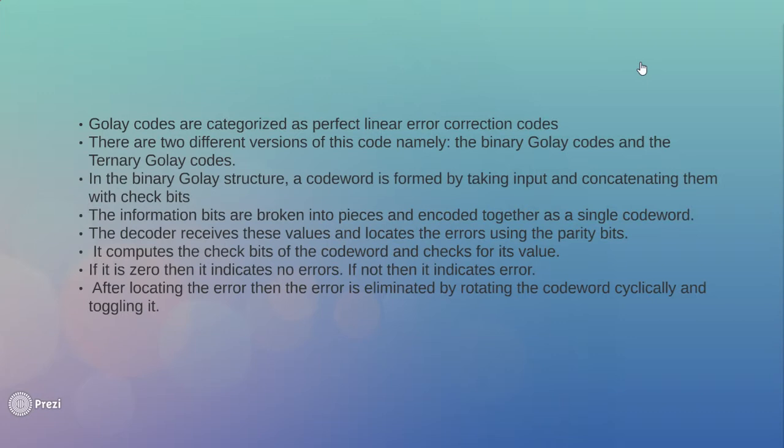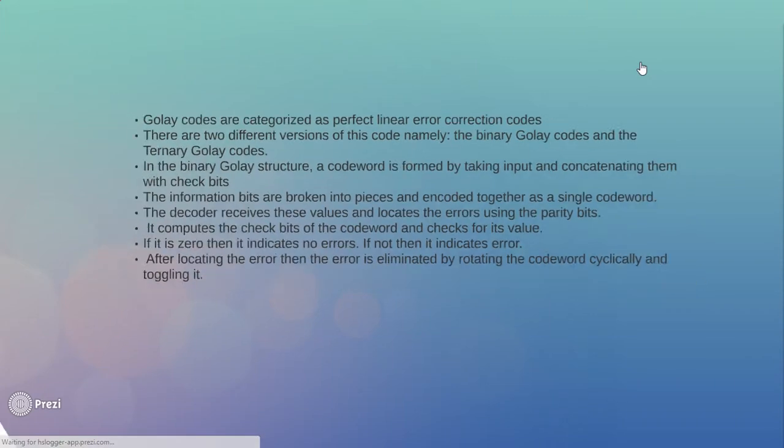The decoder receives these values and locates the errors using the parity bits. It computes the check bits of the codeword and checks for its value. If it is zero then it indicates no errors and if it is non-zero then it indicates errors. Then these errors are eliminated by rotating them cyclically and toggling it.